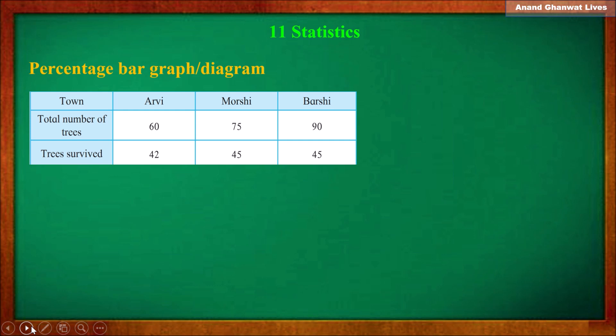There are three towns shown: RV, Morshi, and Barsi. The total number of trees are given. In RV, total number of trees are 60; Morshi, 75; Barsi, 90. Trees survived: in RV — 42, in Morshi — 45, in Barsi — 45. Now if we want to compare the number of trees survived in RV, Morshi, or Barsi, we must equalize the total number of trees.